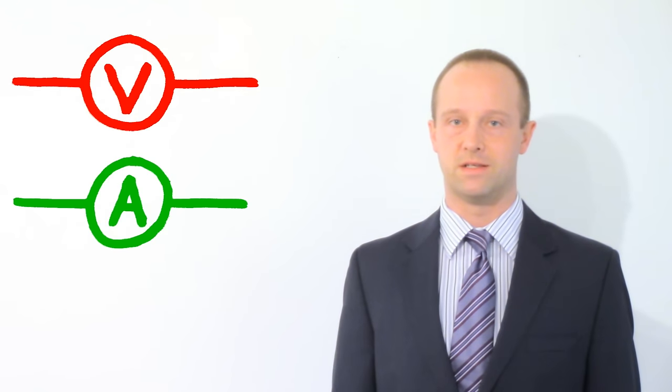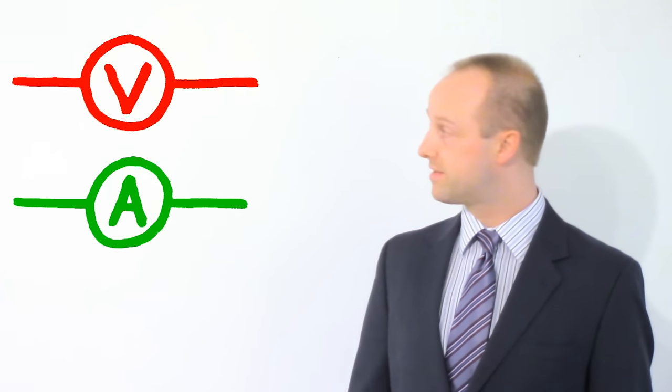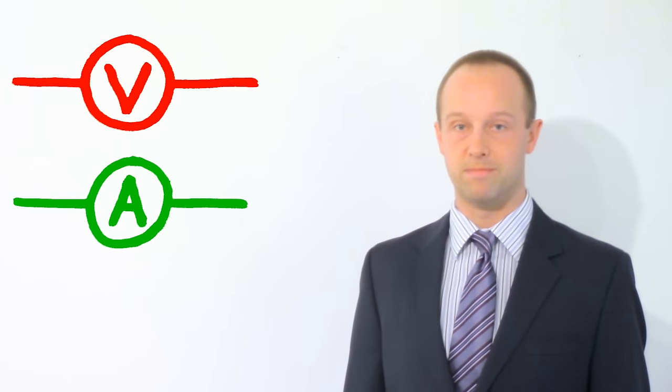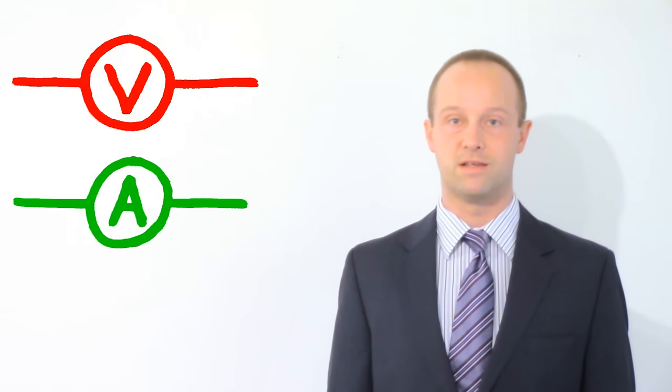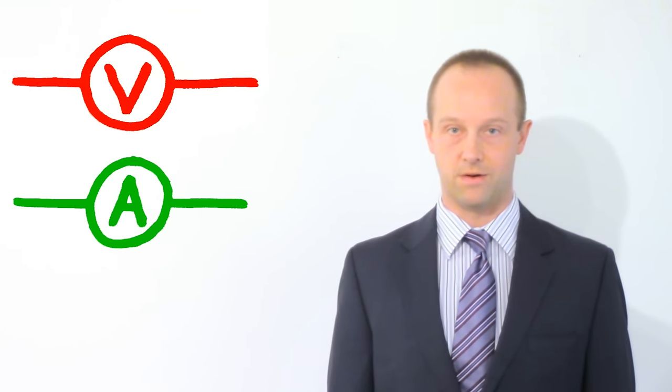Next are voltmeters and ammeters, which are pretty easy to remember because they've got a V and an A in their symbols. I'll talk about how to connect these correctly when I talk about series and parallel circuits in a later video.